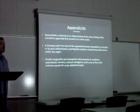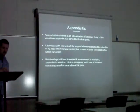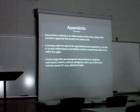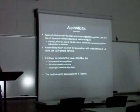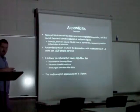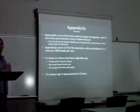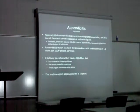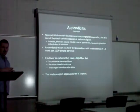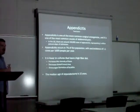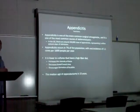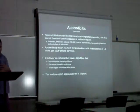Not all acute abdominal pain is appendicitis — that also needs to be said. In the U.S., there are around 250,000 cases of appendicitis representing 1 million patient days of admission per year. Appendicitis occurs in 7% of the population with an incidence rate of 1.1 cases per 1,000 people per year. It is lower in cultures with a high-fiber diet, which increases viscosity of feces, decreases bowel transit times, and discourages formation of fecal liths.